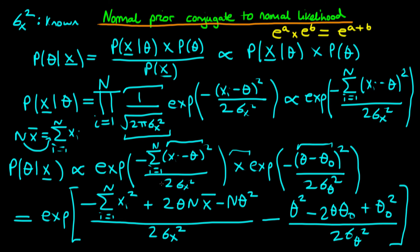We note that some of these terms don't actually contain theta at all, so we can forget about them because we're interested in the distribution in terms of theta. This proportionality allows us to drop the sum of x_i squared term and the theta_0 squared term. We're just left with the theta-containing terms, which will make things a little easier as we continue this derivation in the next video.